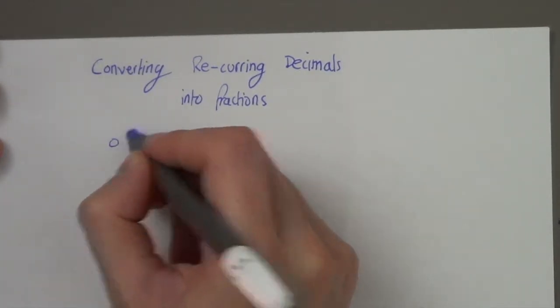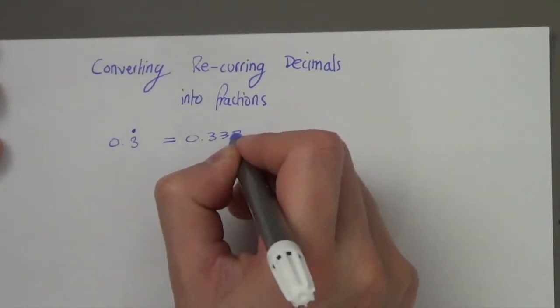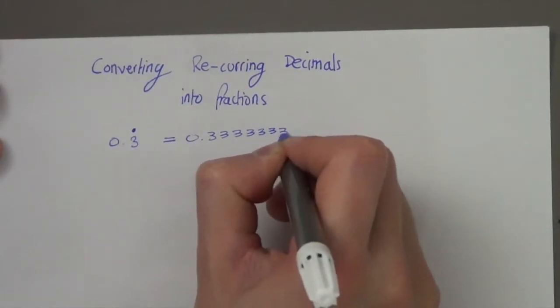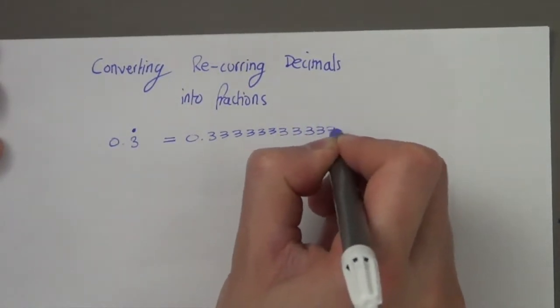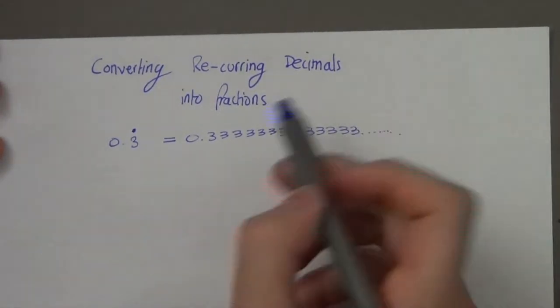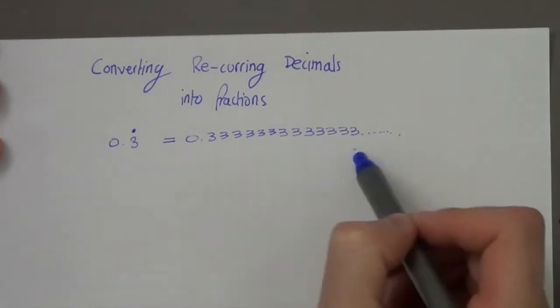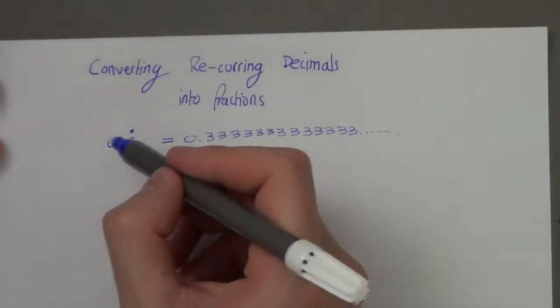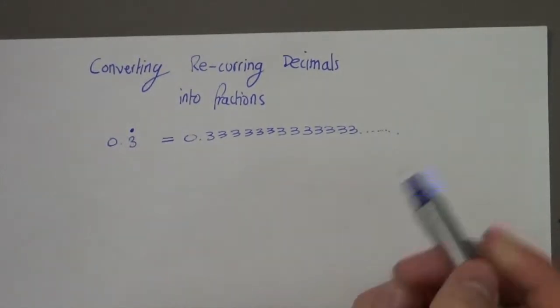So this denotes this number. If I were to continue writing this number, I would be here forever, but basically it's a number that reoccurs constantly, and we put a dot on top of that particular number.